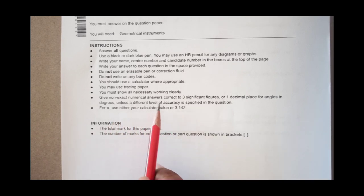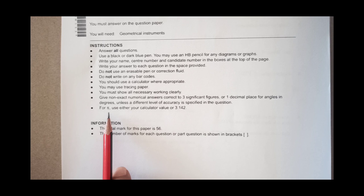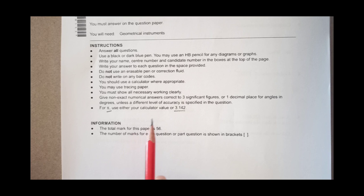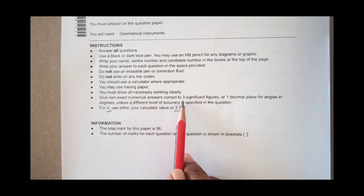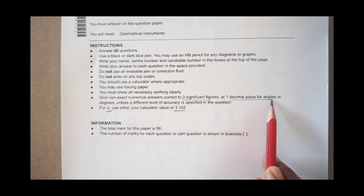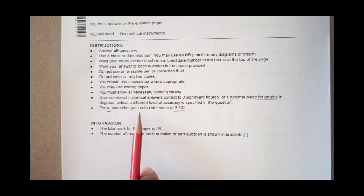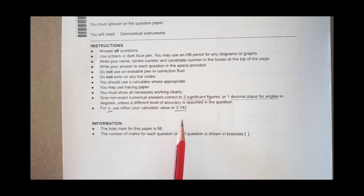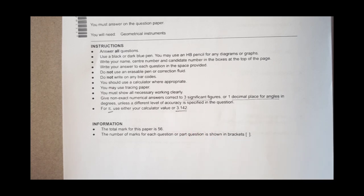Calculator you can use in both papers, but the value of pi you need to use 3.142 or directly from the calculator. Another important instruction is your answers give non-exact numerical answers corrected to 3 significant figures or 1 decimal place for angles in degrees unless a different level of accuracy is specified in the question. When you round your answers be sure that you are doing it in a correct way. Let us start.